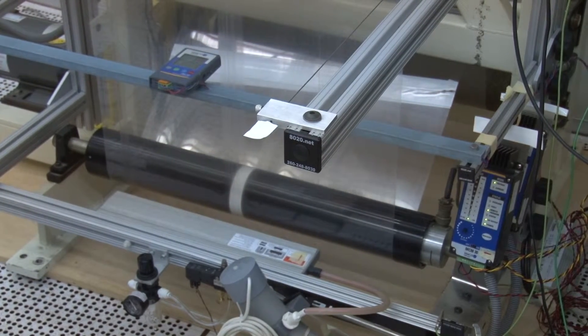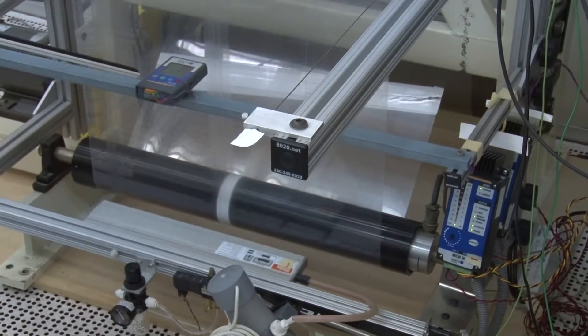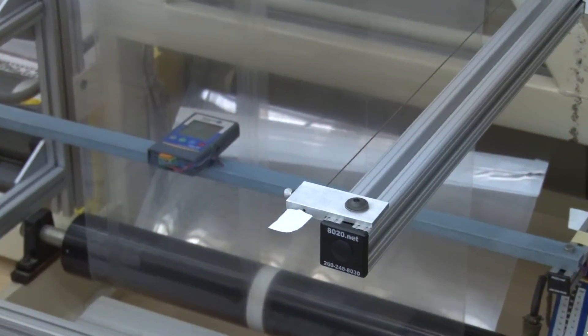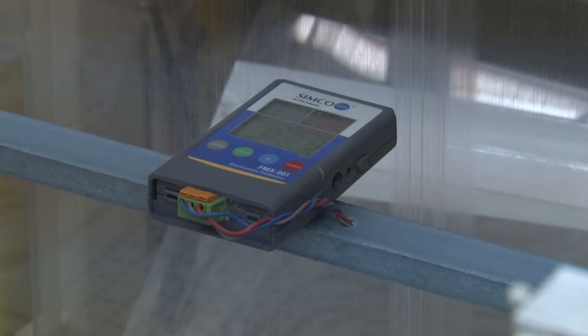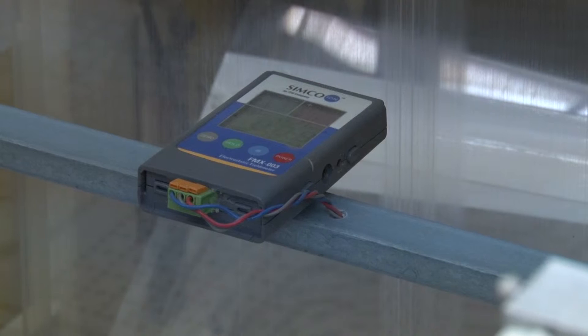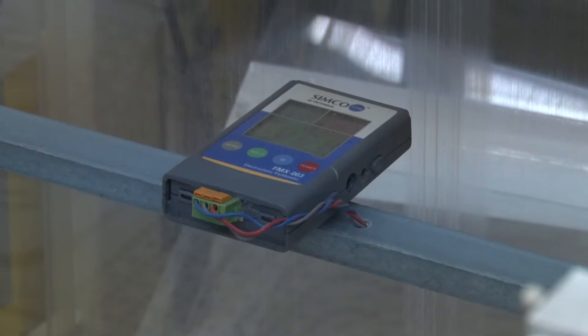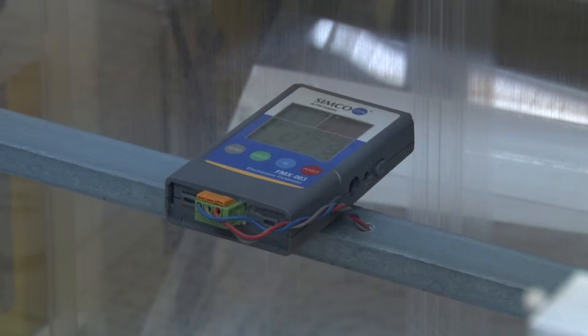If we move downstream from that, again, we have our FMX meter. This is a specially modified unit. We kind of reverse engineered the circuit and added some components there to give us an analog output that we're able to read on our PLC.